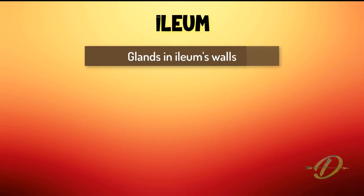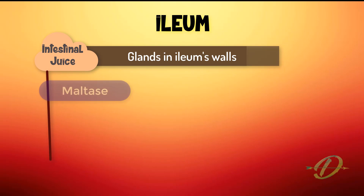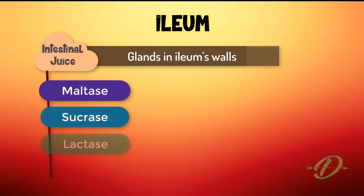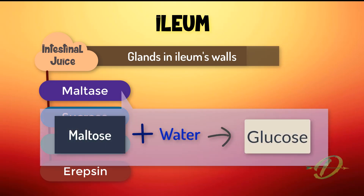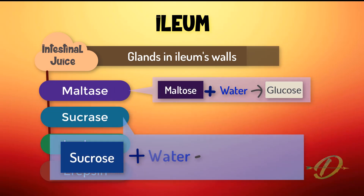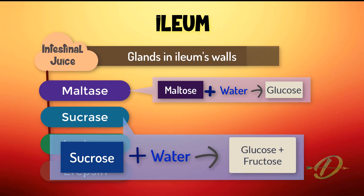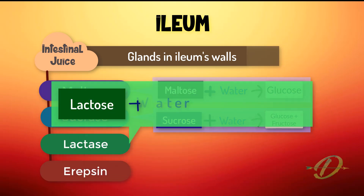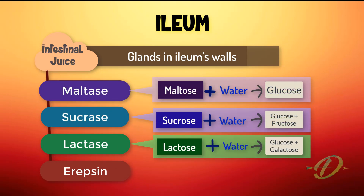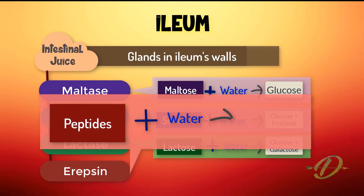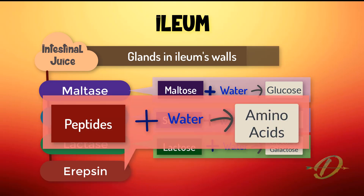Finally, glands in the wall of the ileum secrete intestinal juice, which contains the enzymes maltase, sucrase, lactase, and erepsin. Maltase hydrolyzes maltose into glucose. Sucrase hydrolyzes sucrose into glucose and fructose. Lactase hydrolyzes lactose into glucose and galactose. Lastly, erepsin hydrolyzes peptides into amino acids.